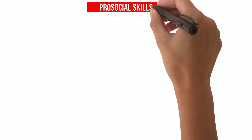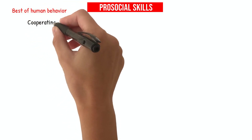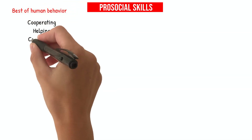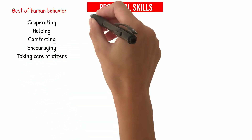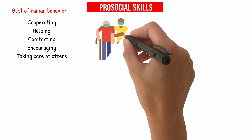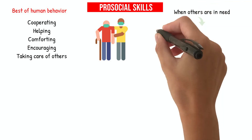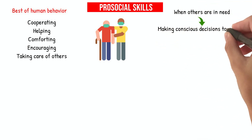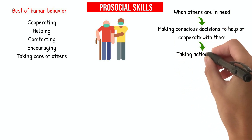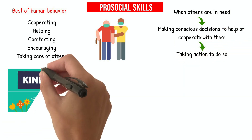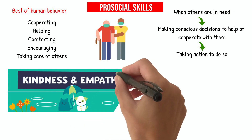Pro-social skills embody the best of human behavior, such as cooperating, helping, comforting, encouraging, and taking care of others. Children can develop these skills by recognizing when others are in need, making conscious decisions to help or cooperate with them, and finally taking action to do so. Through these actions, children can learn the value of kindness and empathy towards others.